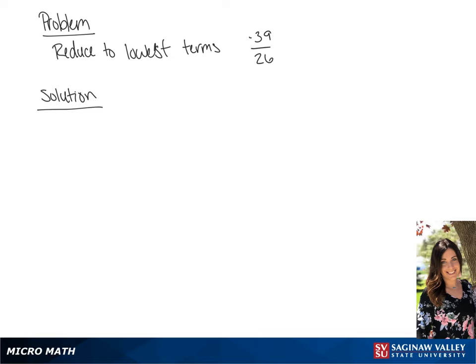We are going to simplify negative 39 over 26. We can rewrite negative 39 as negative 3 times 13, and we can rewrite 26 as 2 times 13.